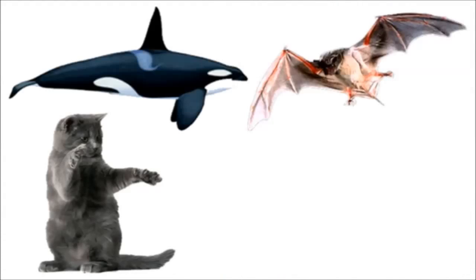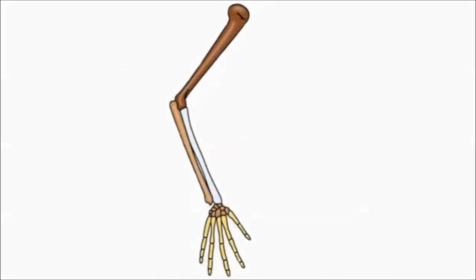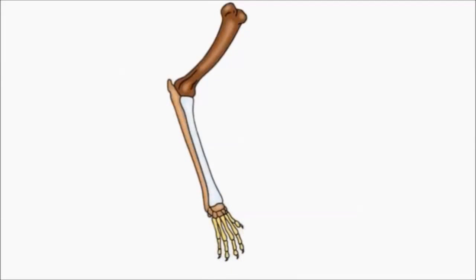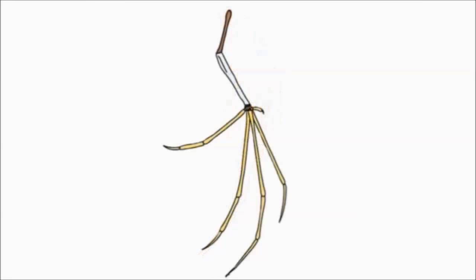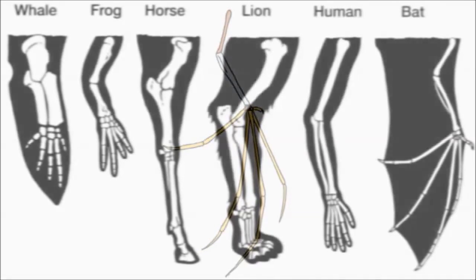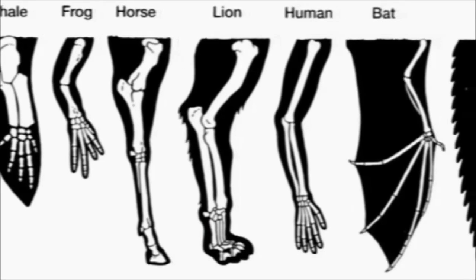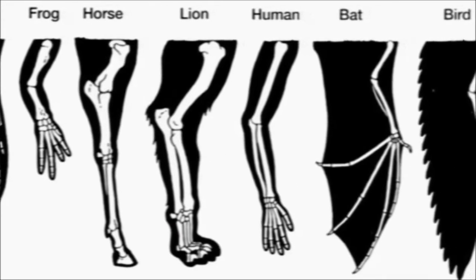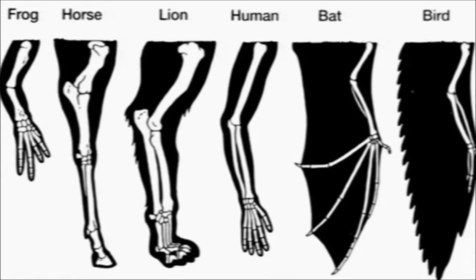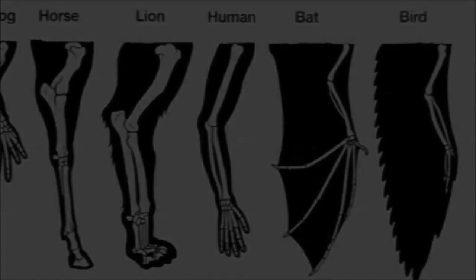The forelimbs, wings, flippers, and arms of different mammals are variations on a common structural theme. Similarity in characteristics resulting from common ancestry is known as homology, and such anatomical signs of evolution are called homologous structures. Comparative anatomy is consistent with all other evidence in testifying evolution is a remodeling process, in which ancestral structures that function in one capacity become modified as they take on new functions.